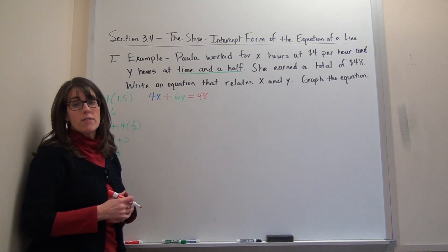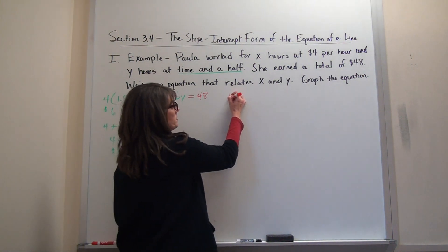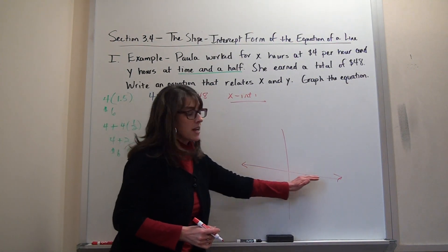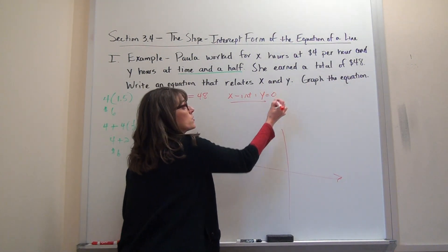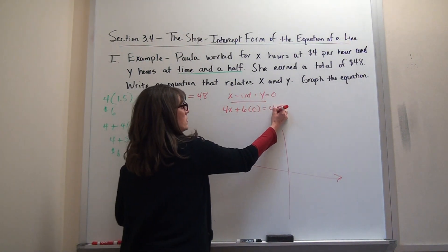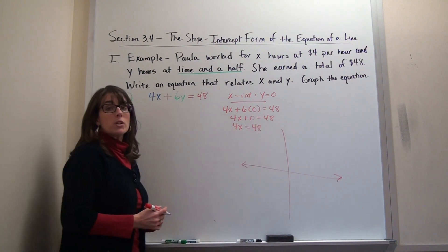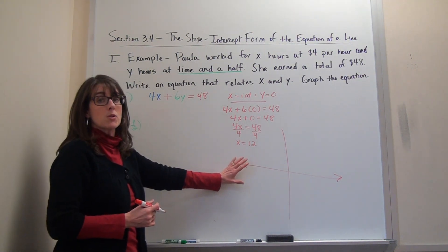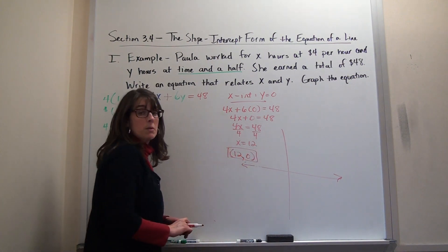The best way to graph that equation right now is to use our x and y intercepts. To get an x-intercept, remember that's where the graph crosses the x-axis. Since there's no up or down movement, the y-coordinate is zero. So I make y equal to zero: 4x = 48, divide by 4, and x = 12. The x-intercept is the point (12, 0).